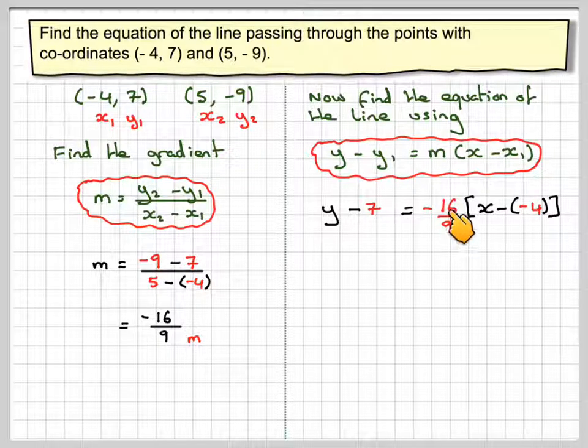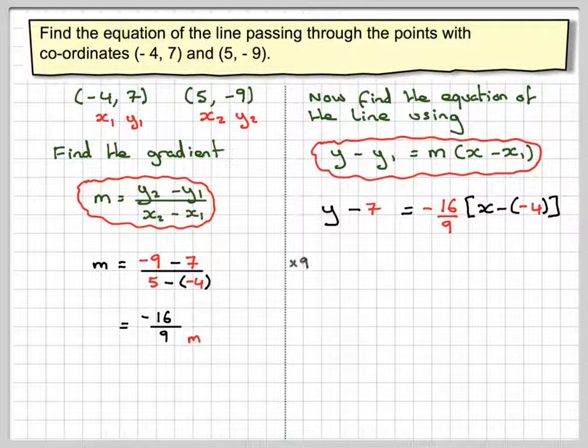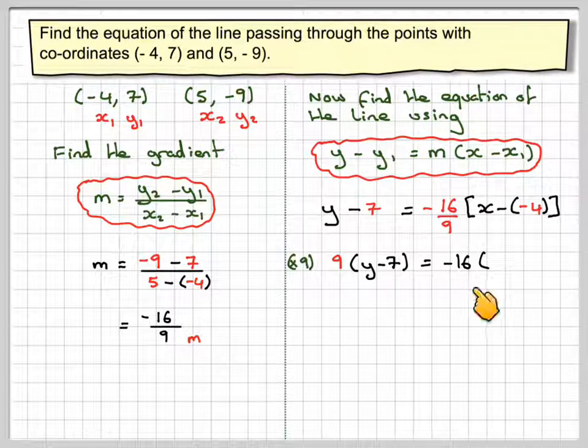Because we've got a fraction here, the easiest thing to do is to take the 9 and bring it up here. So multiplying both sides by 9, we get 9 brackets y minus 7 is equal to -16.